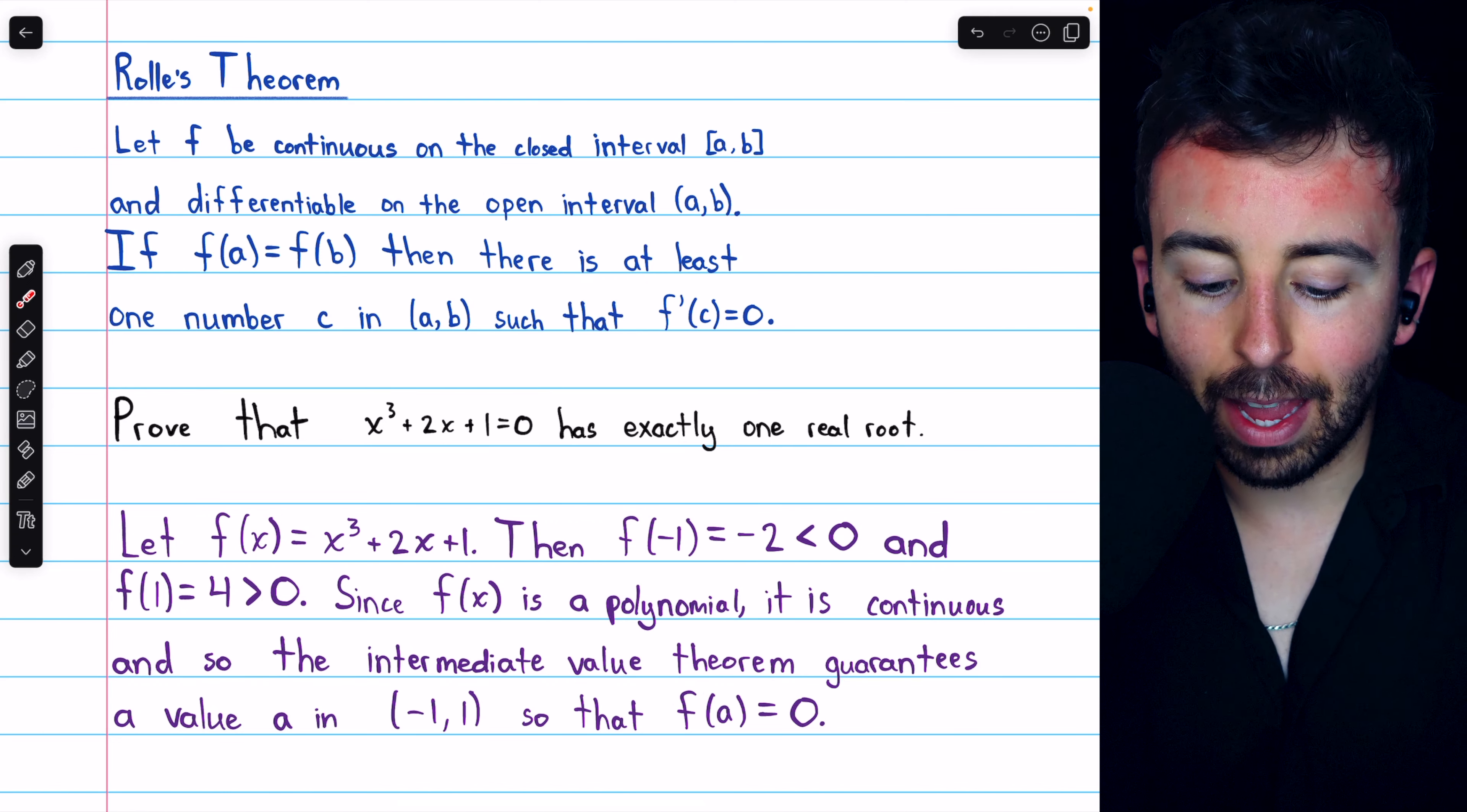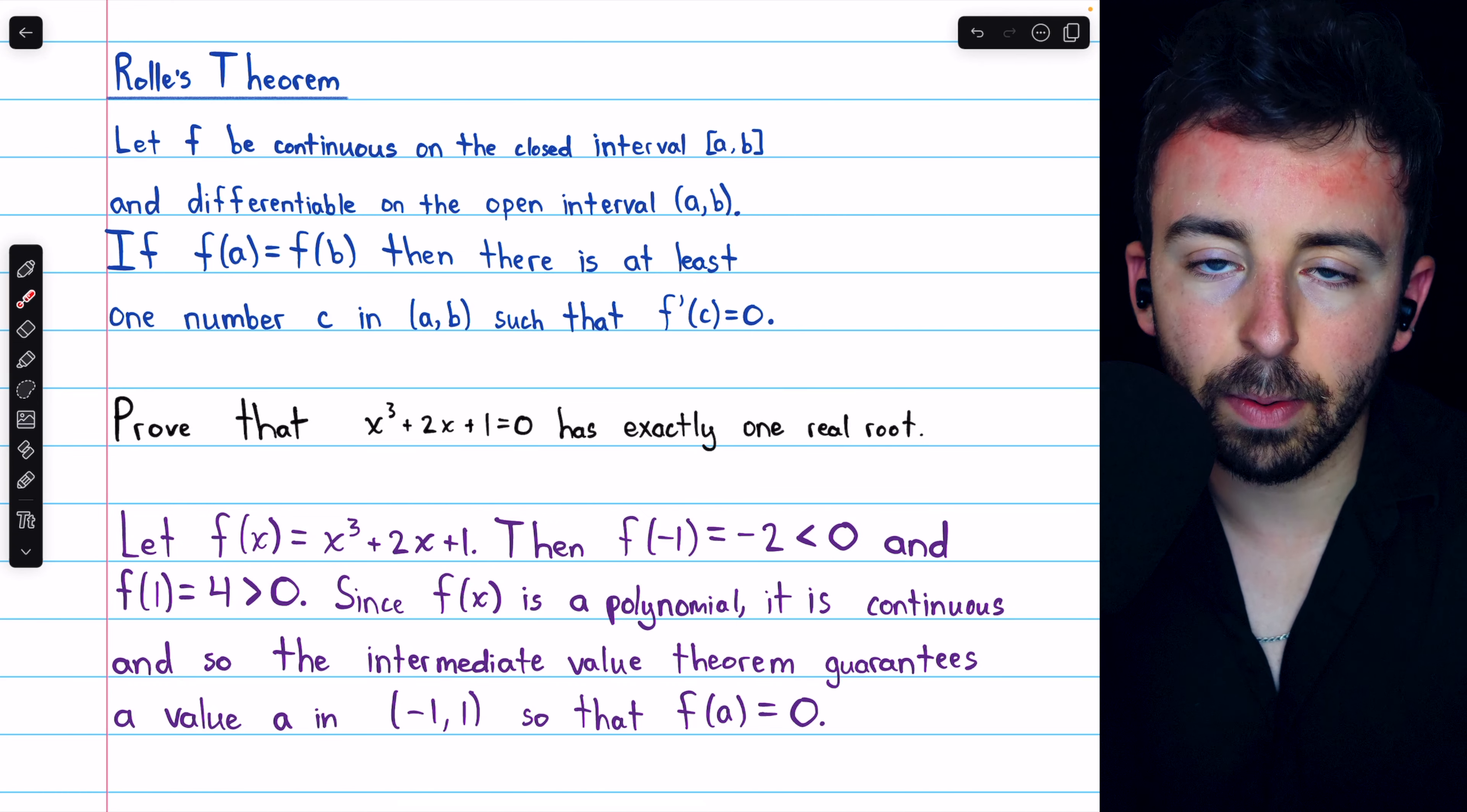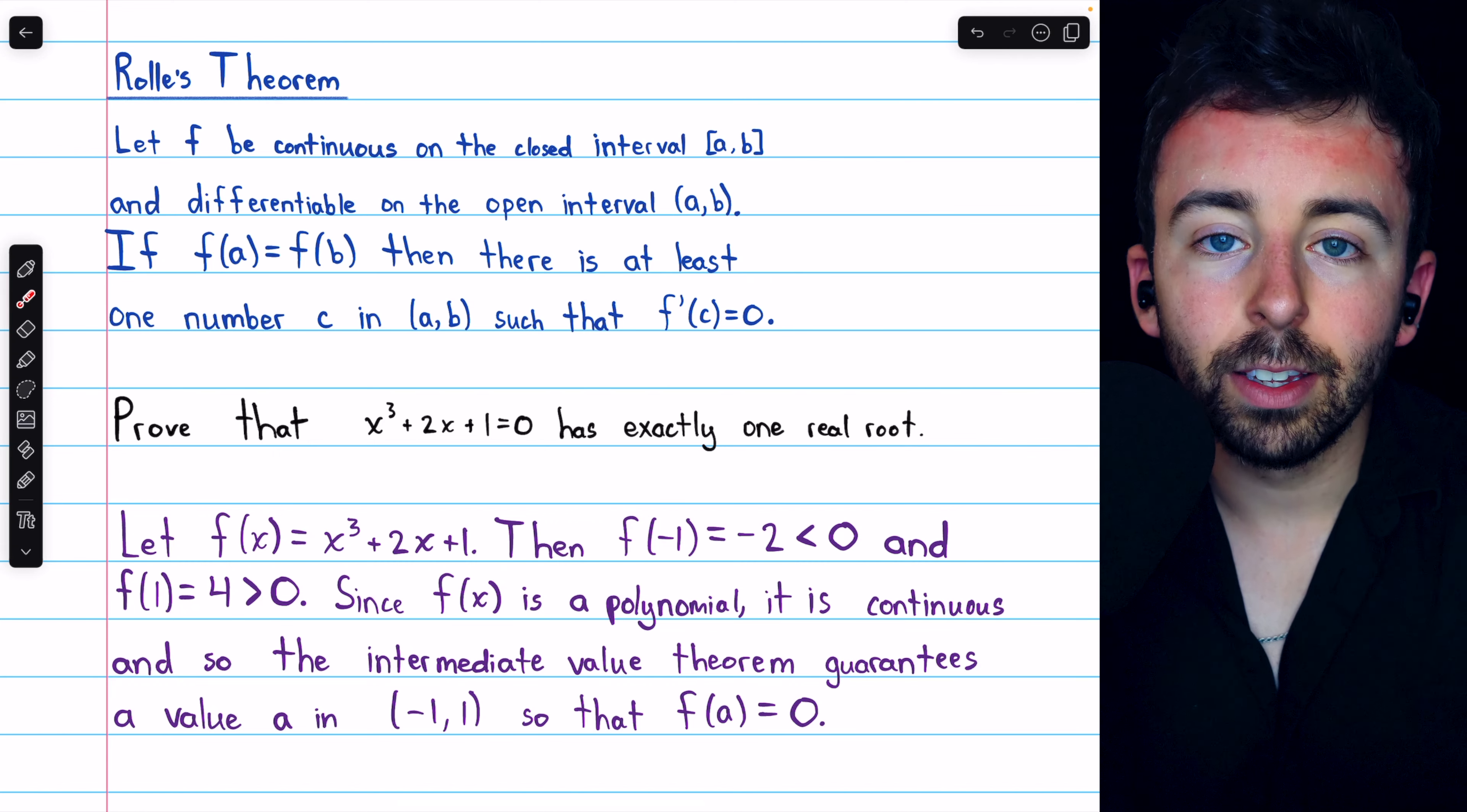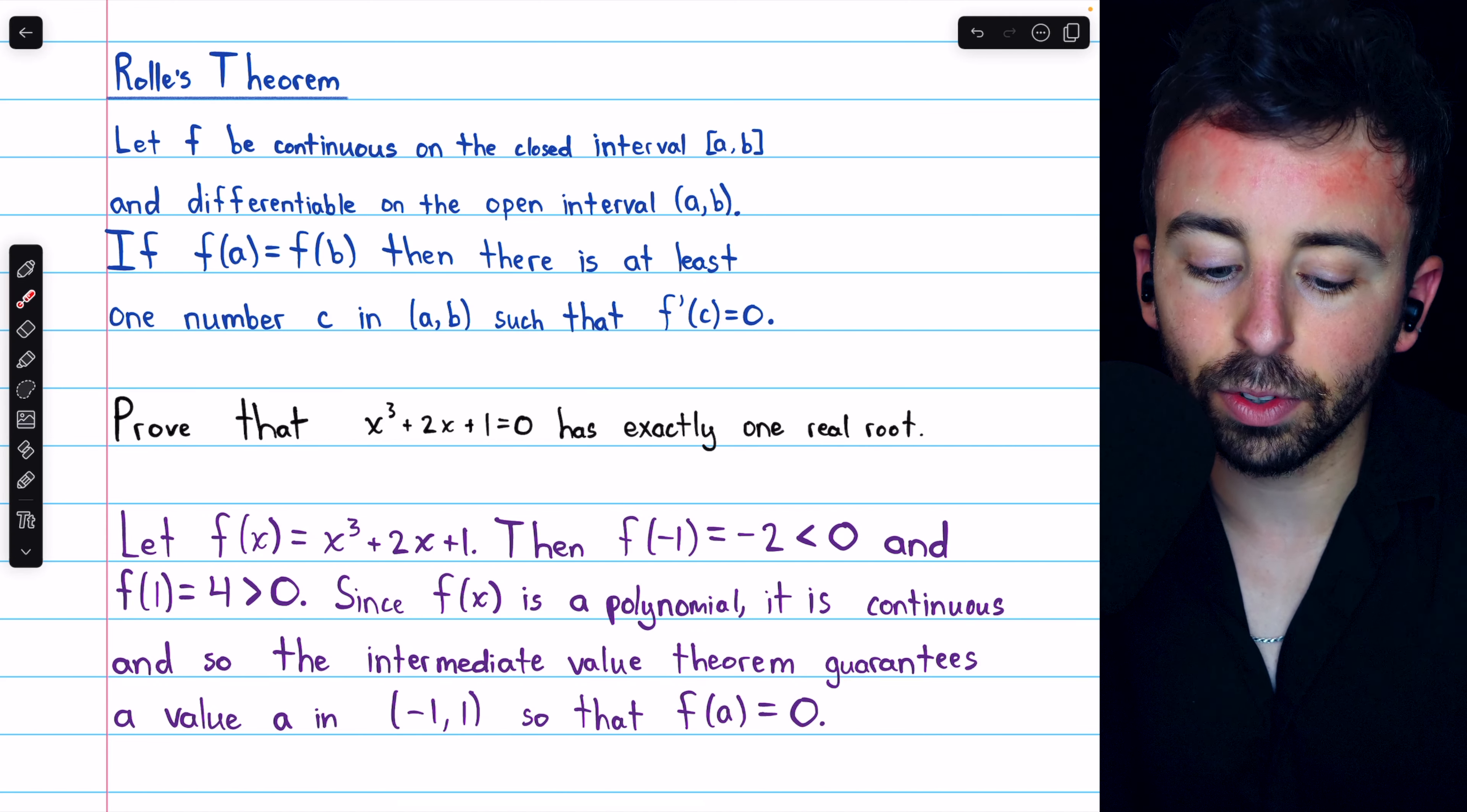So we can begin by saying, f of x, this cubic, it's a polynomial, and so it is continuous. And if we plug in negative one, we get a negative number. If we plug in positive one, we get a positive number. So since the function is continuous, in order to pass from negative to positive, it must at some point pass zero. So the intermediate value theorem certainly guarantees a value, say, a in the open interval from negative one to positive one, so that f of a is equal to zero.